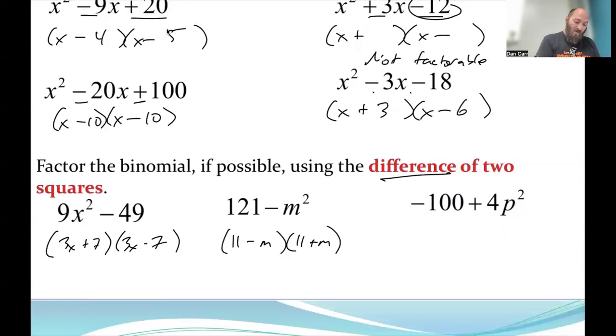So even though this one's an addition problem here, well, first of all, I'm going to factor out a negative four, make it 25 - p². Now it's a difference problem. I mean, technically, I could just switch the two to make it a minus 100, but let's factor this negative four out, because then I could factor it as (5 + p) and (5 - p).